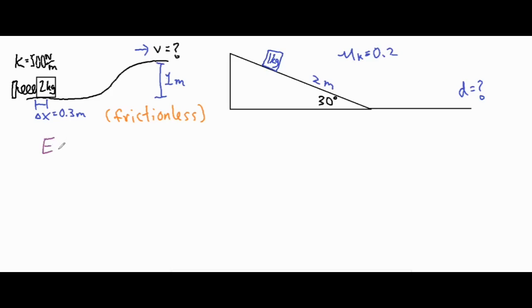Based on the conservation of energy, if we add up all the initial energies that will also equal all of the final energies. Although the object is going to be doing different things or moving at different velocities, in the end if you sum up all the different types of energies in the beginning and the end they're going to be equivalent to one another. This problem is frictionless so there's no work done — no energy added or subtracted from the system.